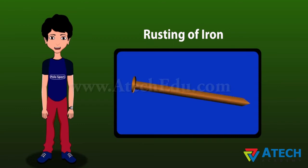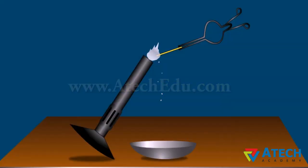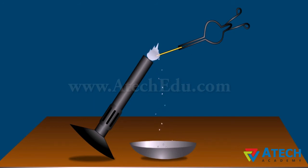Rust forms on the nail and a brownish scale is visible. This is a permanent change and can be expressed in the form of a reaction which cannot be reversed. Similarly, what happens when magnesium ribbon is burnt in the presence of oxygen? A dazzling white flame occurs.